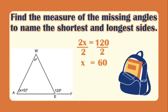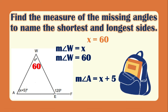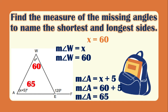We can now solve the measurement of angle W and angle A. The measurement of angle W is X, so angle W is 60 degrees. The measurement of angle A is X plus 5, so substituting X equals 60, angle A is 60 plus 5, which is 65 degrees. To find the missing interior angle, we add the two known interior angles and subtract from 180 degrees. So the measurement of that angle is 55 degrees.